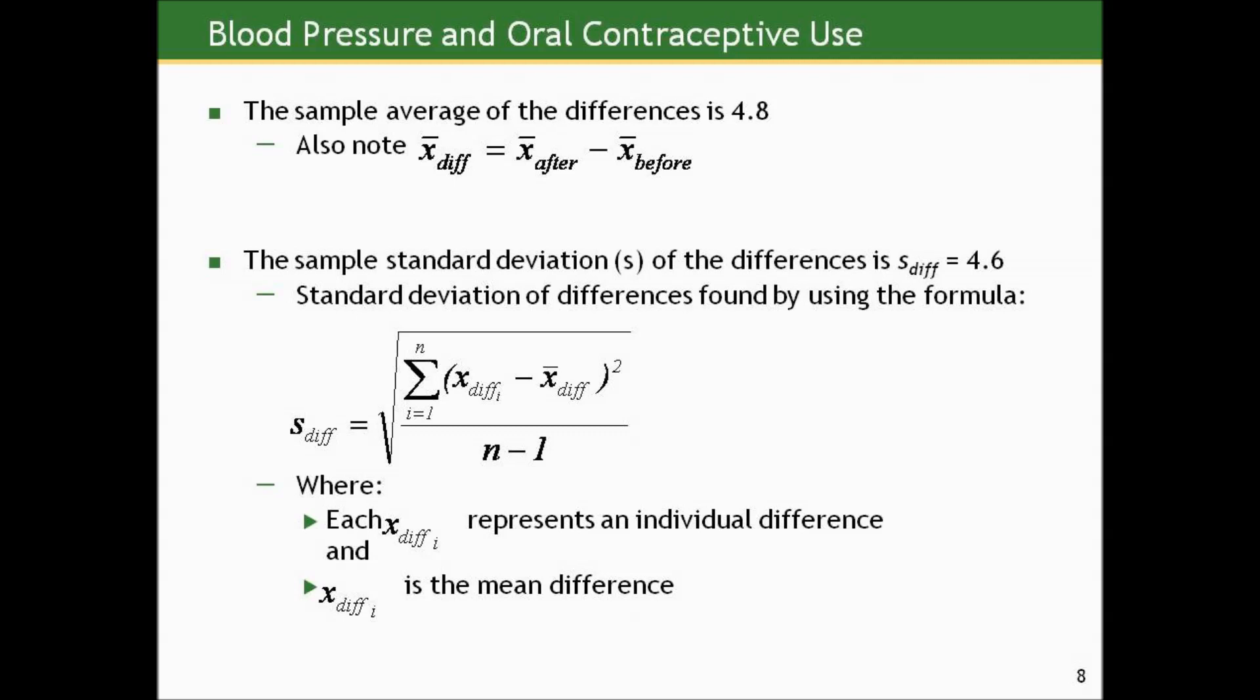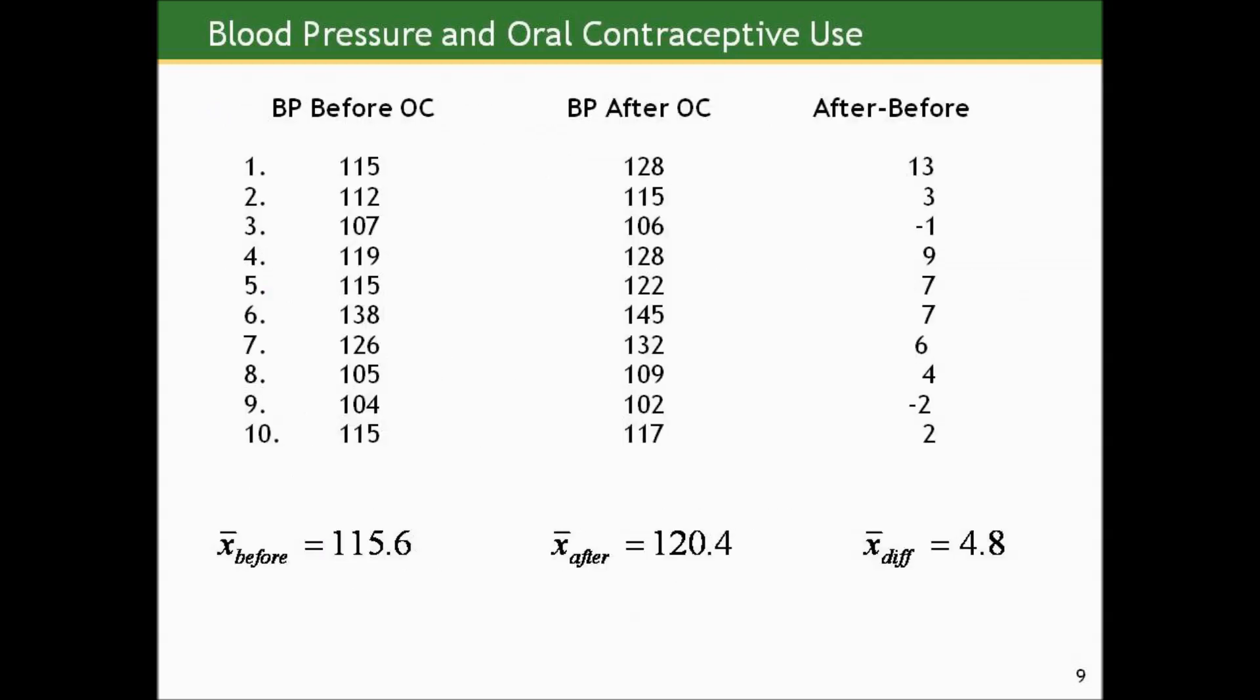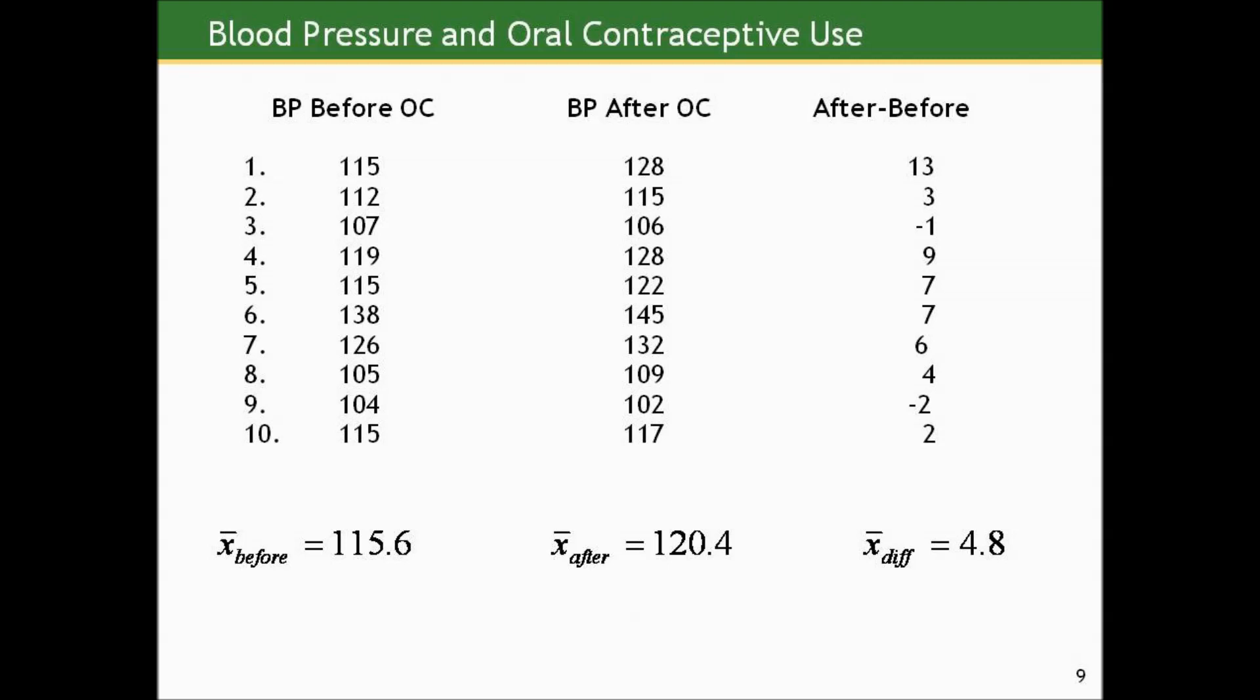The sample standard deviations of the differences, however, can only be computed by calculating the differences first. And we'll talk about why that is in the next set of lectures. The standard deviation of the differences, once you've created the differences, you just have a single set of 10 numbers and it's computed the same way. We take the difference between each observed difference on each of the 10 subjects and the mean overall difference, squaring that, summing that up across all 10 subjects, dividing by the sample size of 10 less 1 and taking the square root of that.